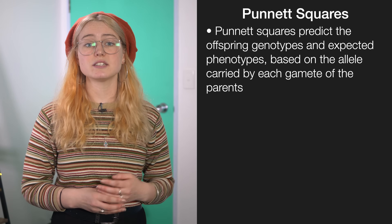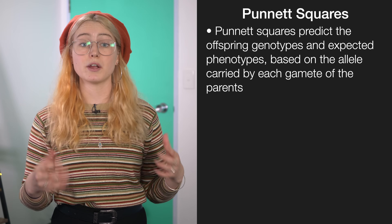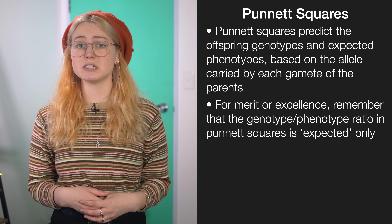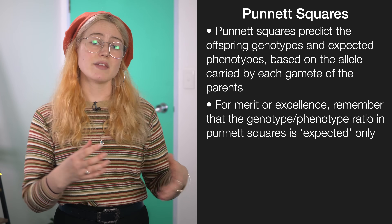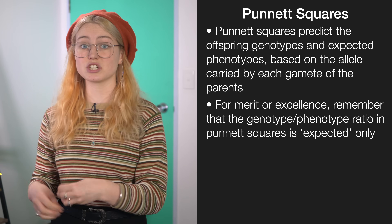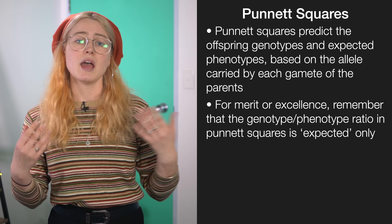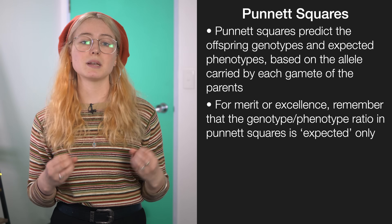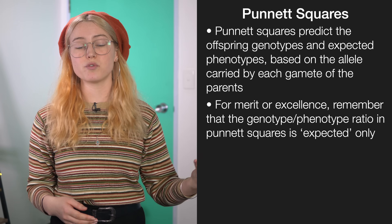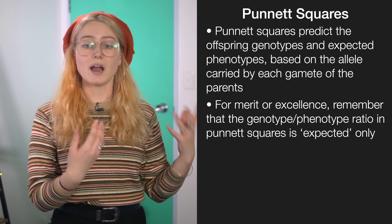This standard also requires that you interpret and sometimes draw Punnett squares or pedigree charts. Punnett squares show you the expected genotypic outcome of a pairing of two organisms. For merit and excellence, you really want to be discussing how it's all a game of probability — there will sometimes be a difference between your expected phenotype outcome and what actually happens, because every fertilization is completely by chance. This means that every time fertilization occurs, you have a one in four chance of getting any of those genotypic outcomes.